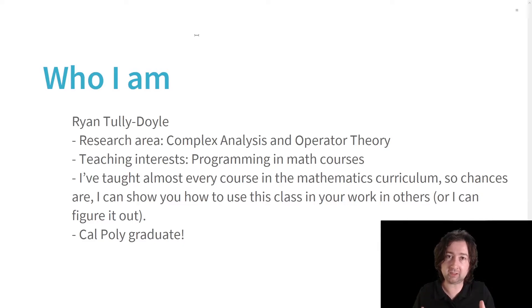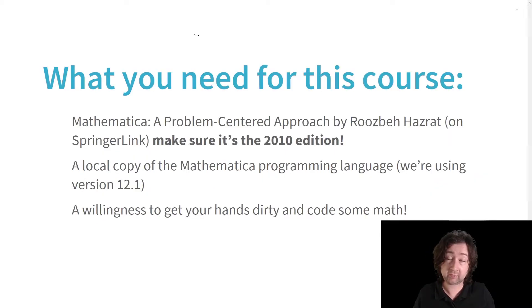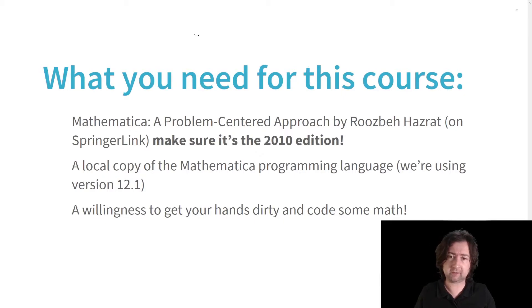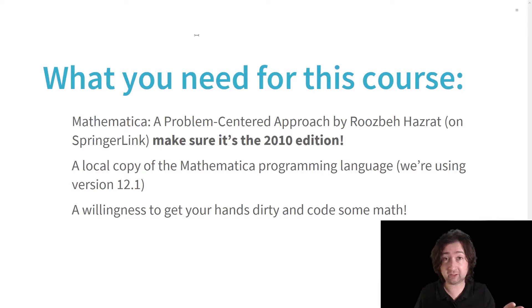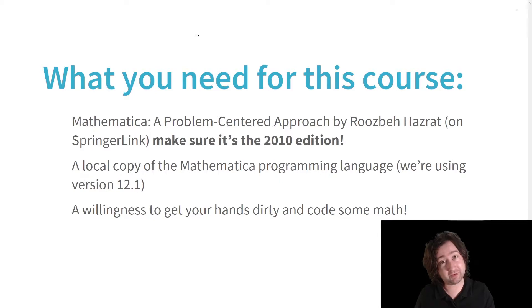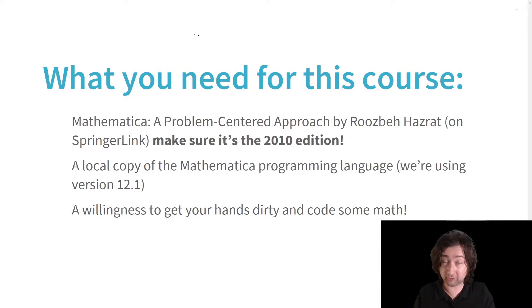That attitude — that problems can be investigated with a computer to gather evidence — is a very strong part of what it means to be a Cal Poly math major. For the class, you're going to need the book, which is Mathematica: A Problem-Centered Approach by Ruspa Hazrat. Make sure you get the 2010 edition, because the 2015 edition adds a chapter and changes a bunch of the exercises, and the mistakes in the first edition give us the opportunity to learn by correcting them, which is built into the homework exercises.